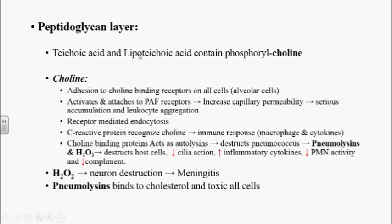These organisms have many virulent factors. One important virulent factor is the peptidoglycan layer. On this peptidoglycan layer, there are almost 500 varieties of proteins present which help in causing infection. These include teichoic acids and lipoteichoic acids. Lipoteichoic acids are teichoic acids that attach to the cell membrane. Both teichoic acids and lipoteichoic acids contain phosphorylcholine molecules.